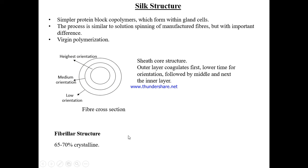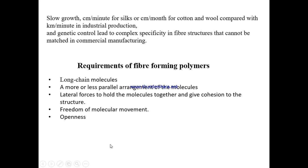Silk has a fibrillar structure and is 65–70% crystalline. The manufacturing rate for silk by the silkworm is about 1 centimeter per minute, while for cotton and wool it is about 1 centimeter per month. In contrast, industrial production of polyester, nylon, and viscose runs at approximately 1 kilometer per minute — much higher than natural fiber growth rates.